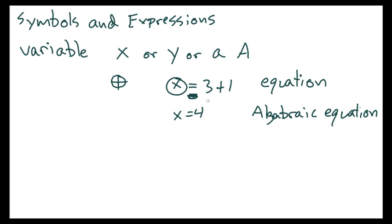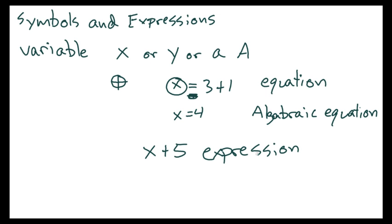So if it has a variable, it's an algebraic equation. If it doesn't have an equal sign — so if it's just x plus 5, for instance — that is just called an expression.